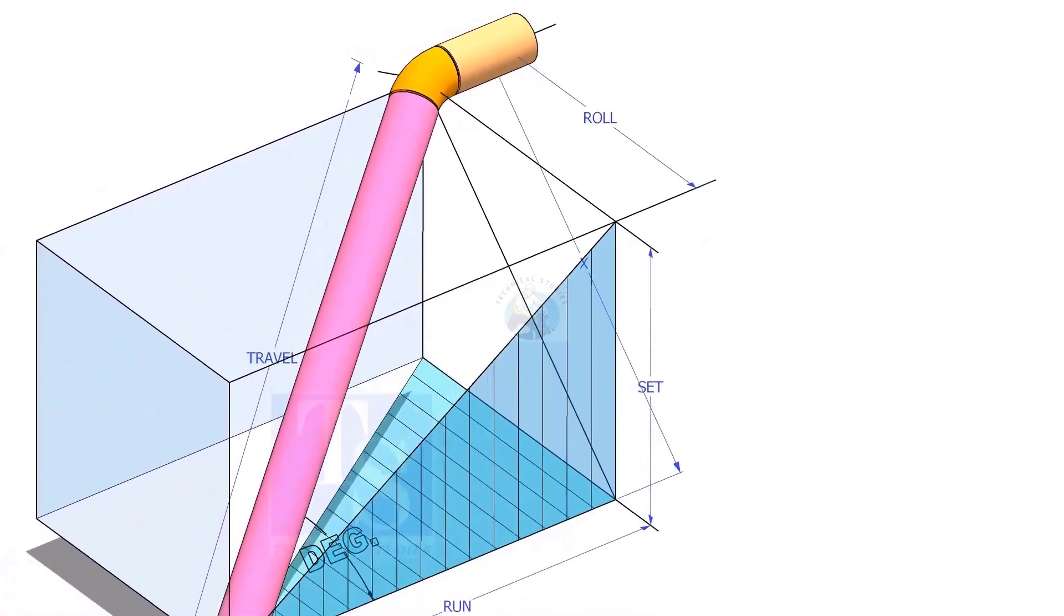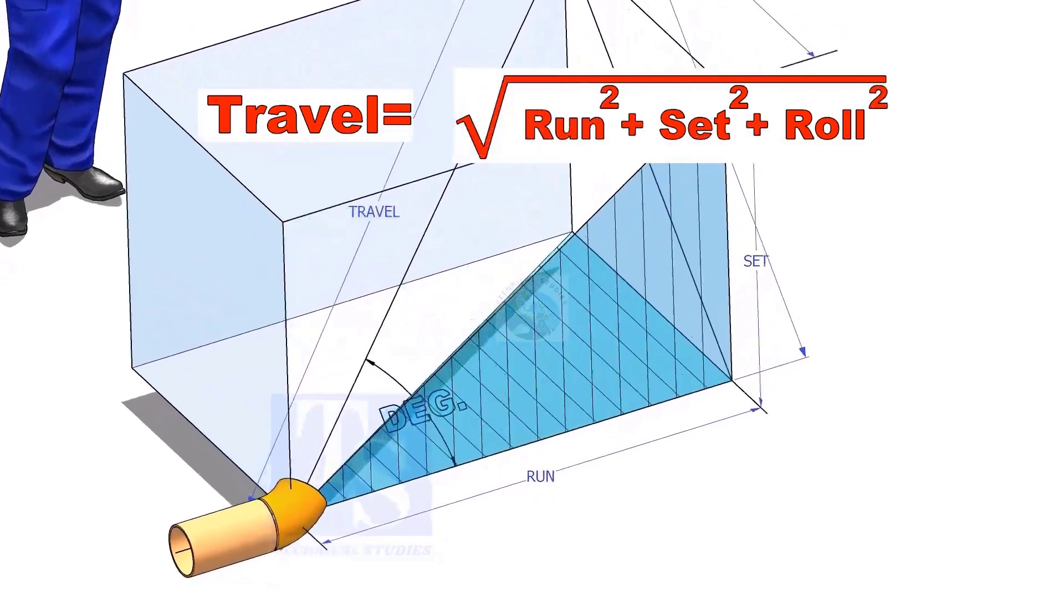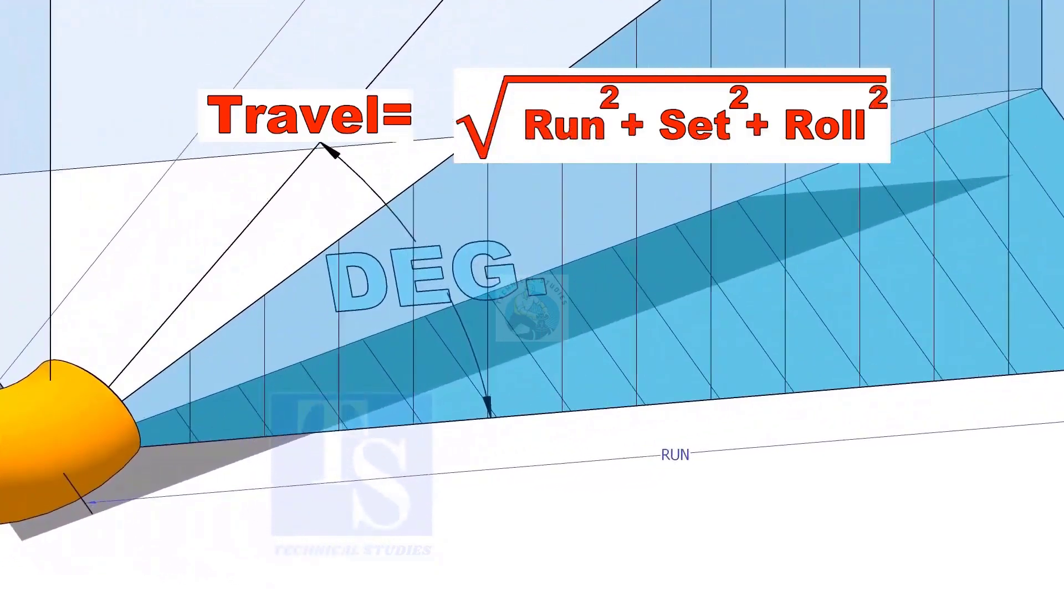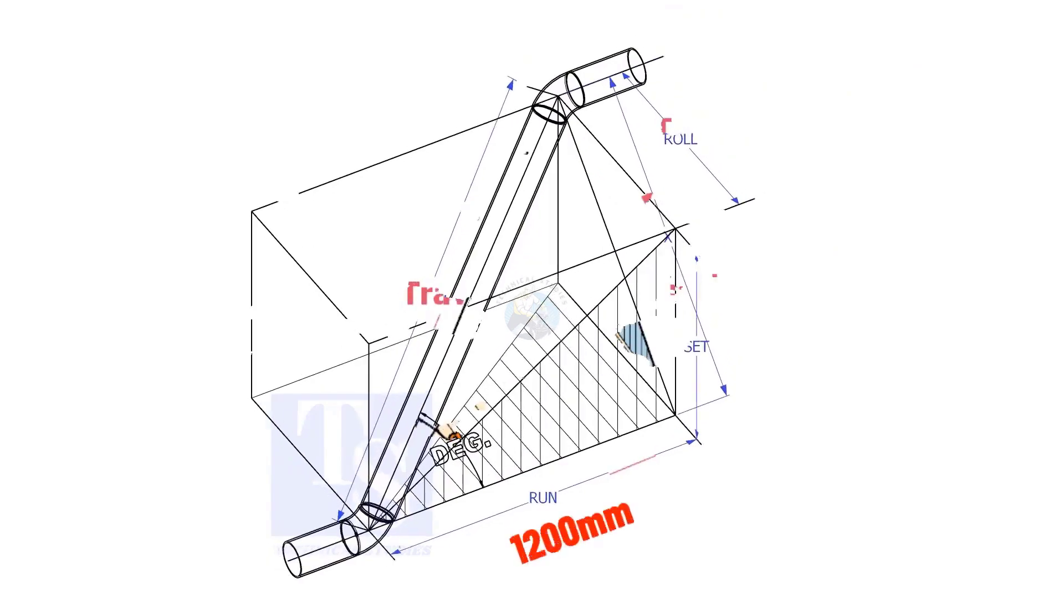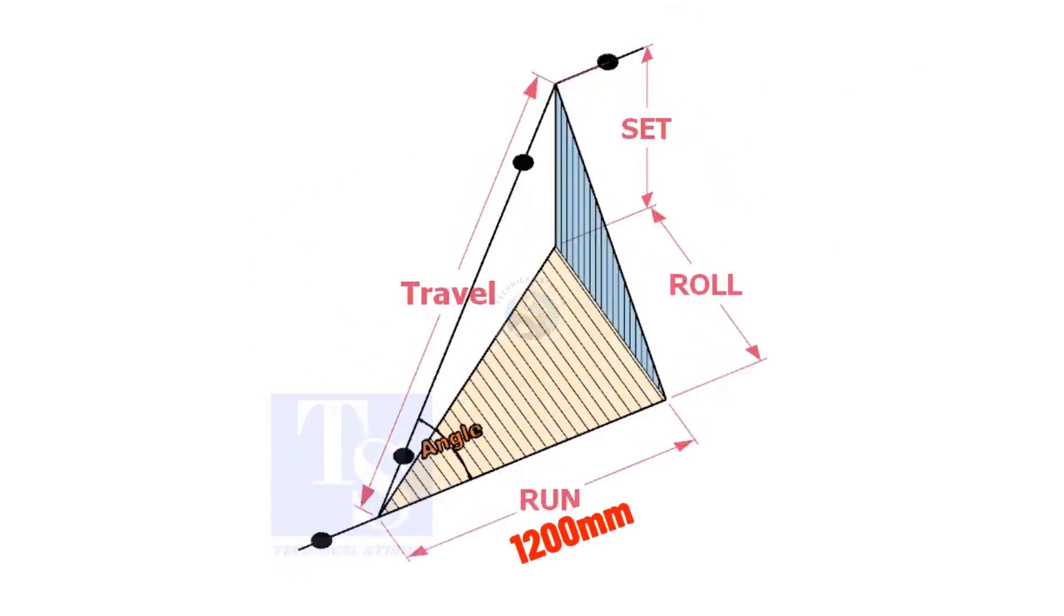The formula to calculate the travel length is root of the sum of the run, set, and roll. Assume that the run is 1200 millimeters, set is 1000 millimeters, and the roll is 800 millimeters.